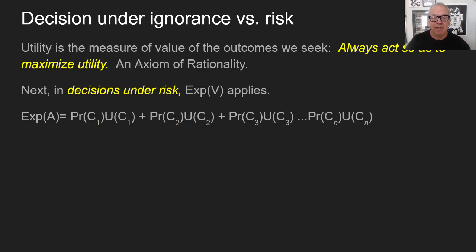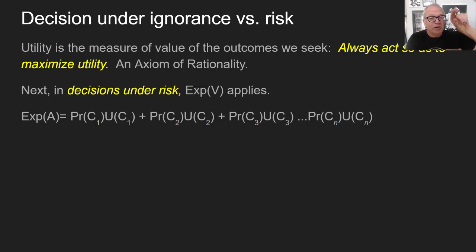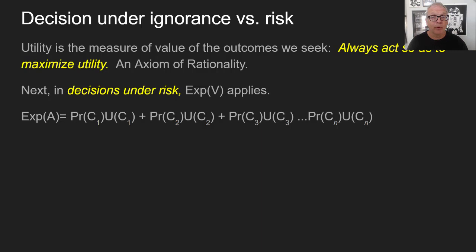The expected value theorem says the expected value for action A equals a weighted average of consequences. For an action there might be any number of different consequences — consequence one, consequence two, and so on out to consequence n. For each one of those consequences, we split them out. For example, if I run a red light, one consequence is that I'm now in a car wreck because somebody going through the green on the other side hits my car. That's a very negative disutility.